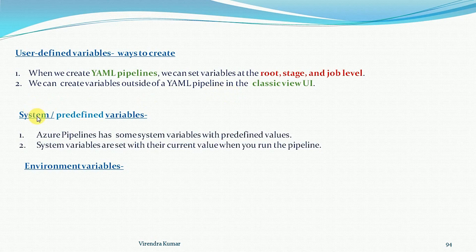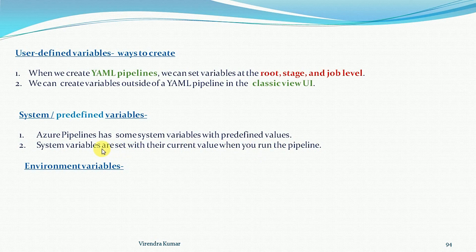Now for system and predefined variables: Azure Pipelines has some system variables with predefined values that we cannot change. System variables are set with their current value when you run the pipeline. For example, when you run the pipeline on the Microsoft operating system, the variable will set the OS as Windows.